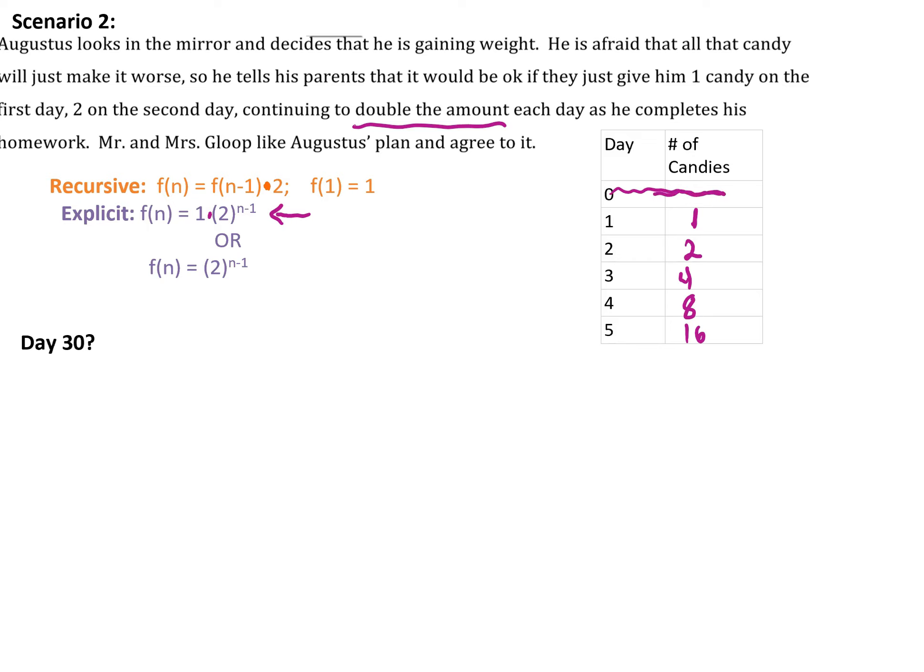On this plan, day zero is not necessarily zero candy, so let's get rid of that row. We can only do this rule here. Day zero actually doesn't really make a lot of sense in this scenario. So f(n) = 2^(n-1) is the simplest way we can write it, because one times anything leaves it the same.